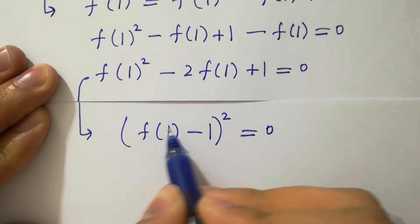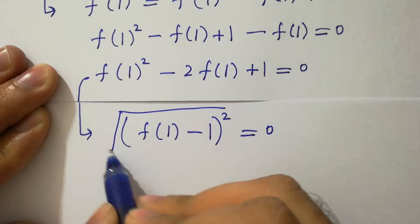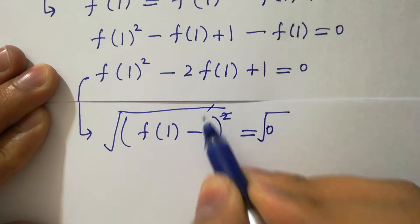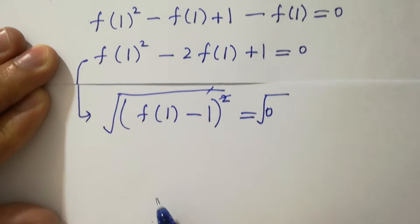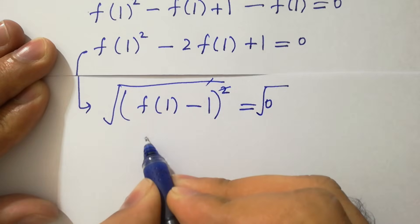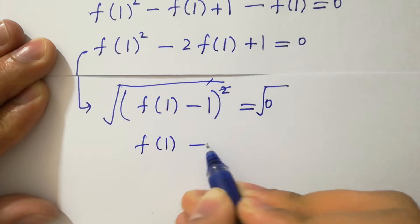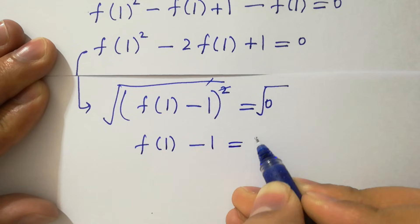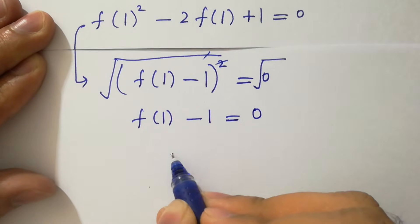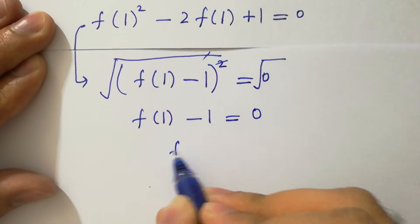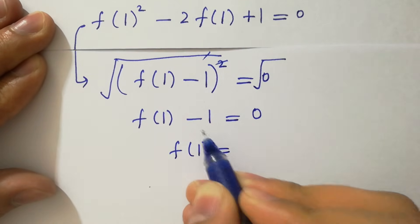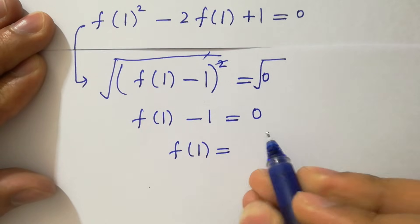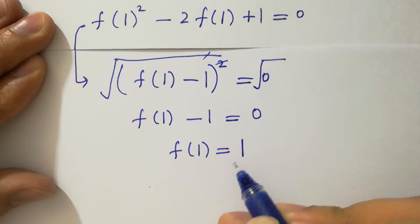Take square root on both sides. The square cancels from the square root. We have f of 1 minus 1 equal to 0, so f of 1 equal to 1.